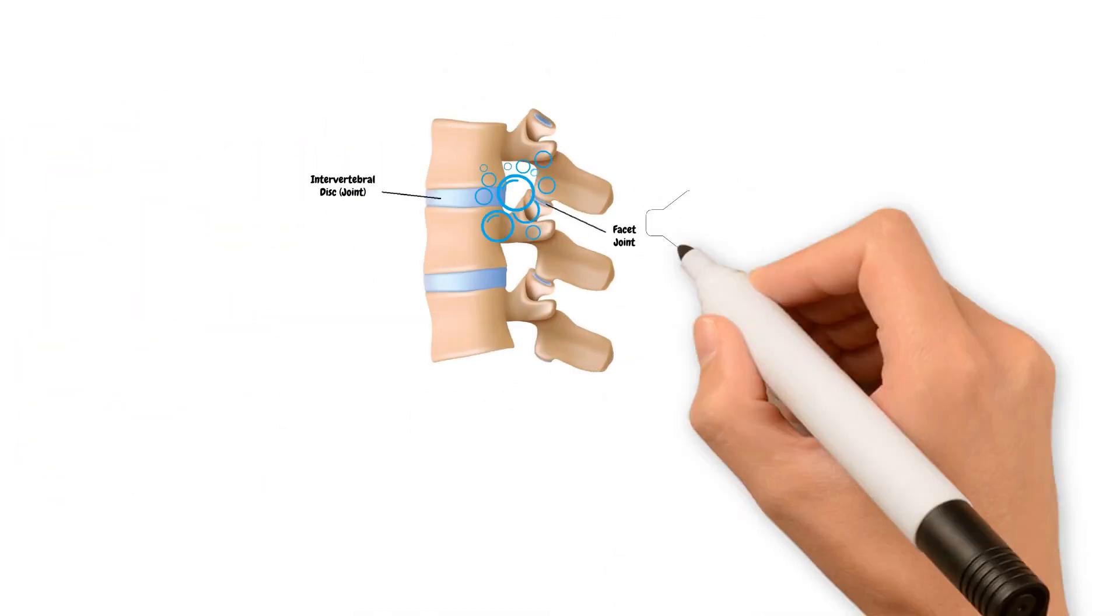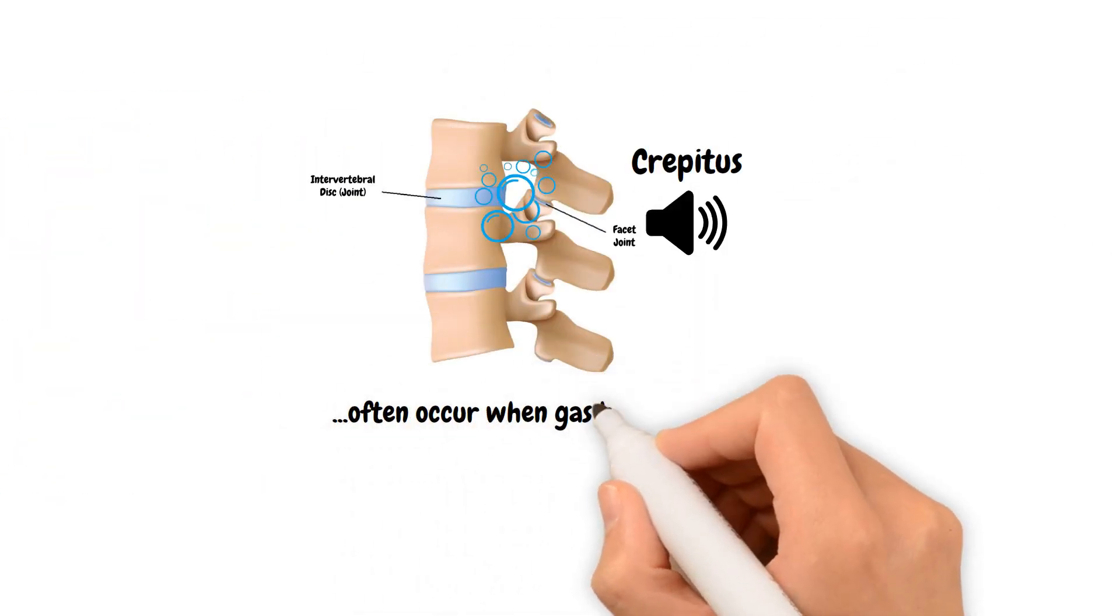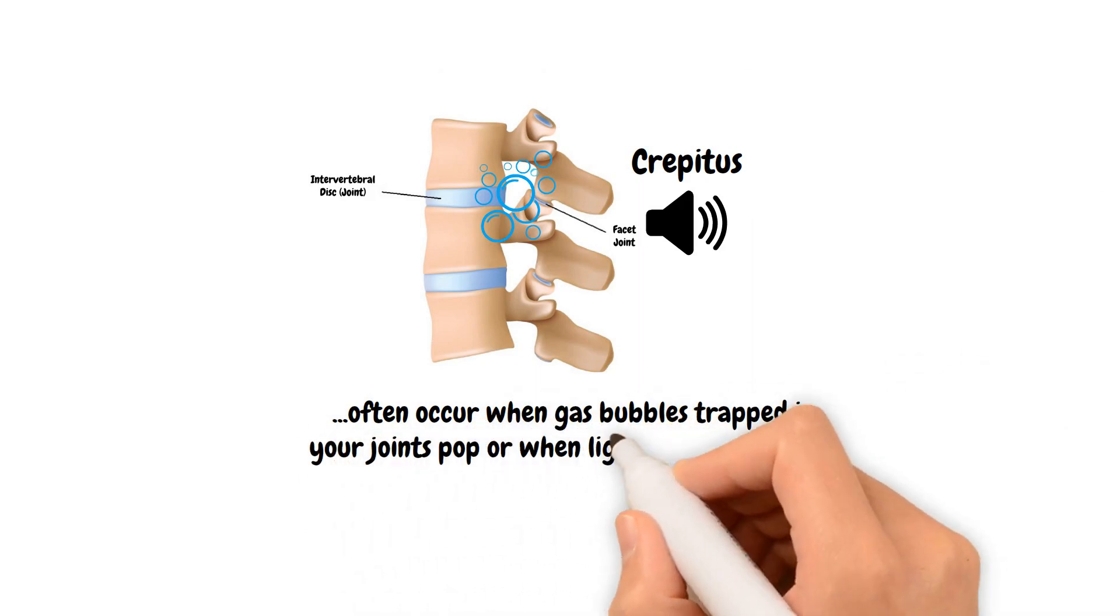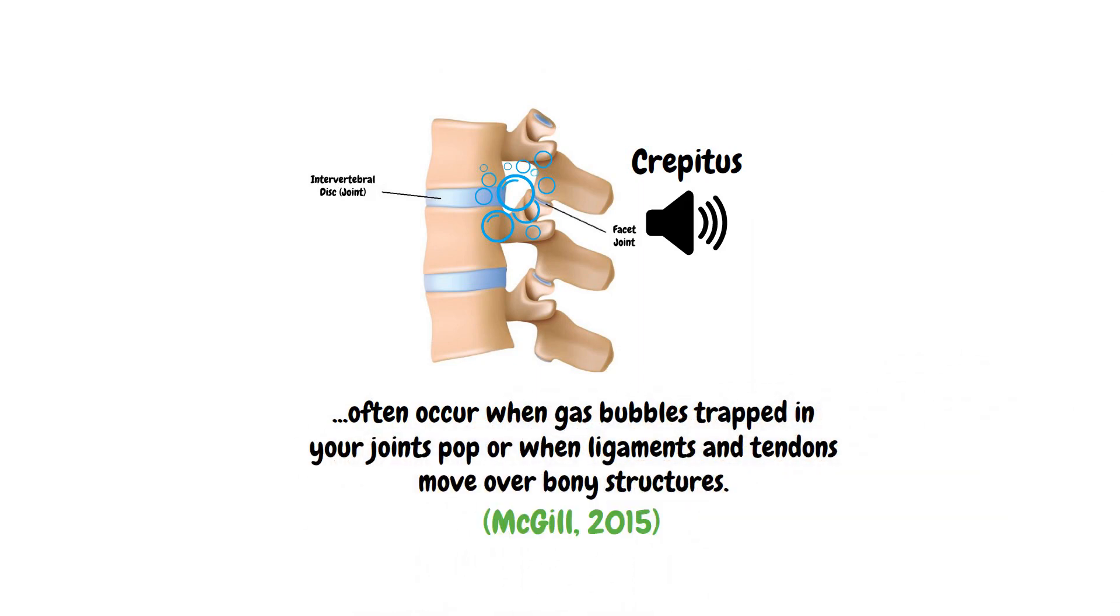These sounds, also known as crepitus, often occur when gas bubbles trapped in your joints pop or when ligaments and tendons move over bony structures.